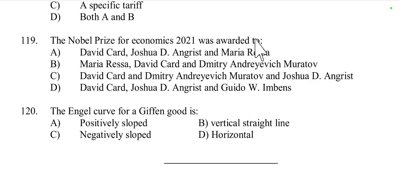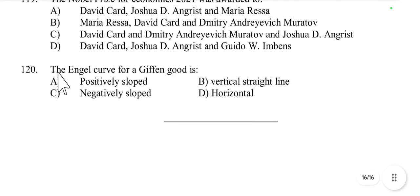Question 119: The Nobel Prize for Economics 2021 was awarded to David Card, Joshua D. Angrist, and Guido W. Imbens.